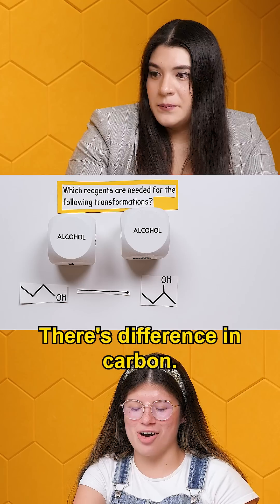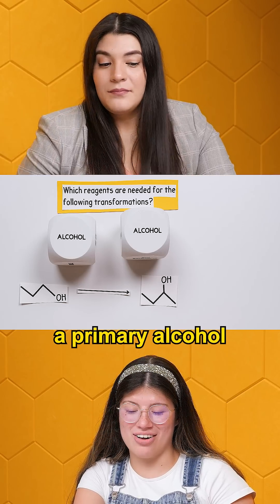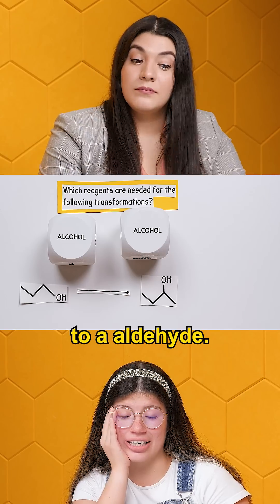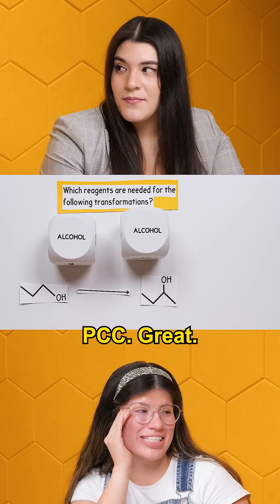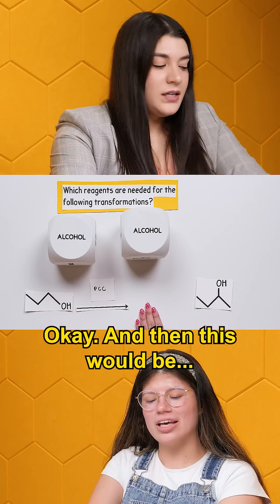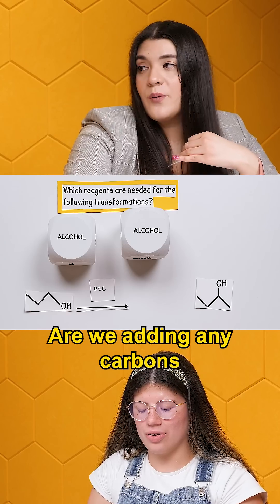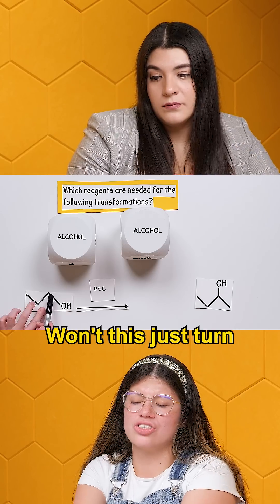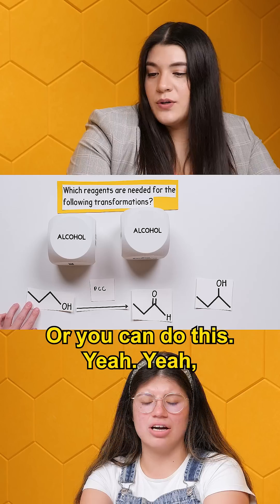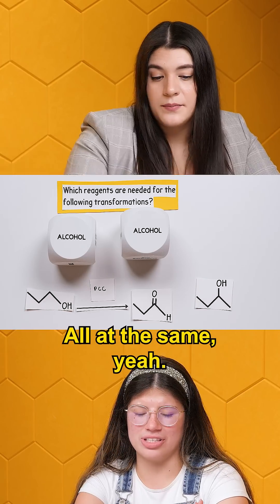There's a difference in carbon. Maybe you could go from a primary alcohol to an aldehyde — and then PCC. And then this would be an aldehyde. Are we adding any carbons or keeping the same? Won't this just turn into a double bond and there's a hydrogen here? You still won't add anything. Yeah, but it's still at the same carbon.